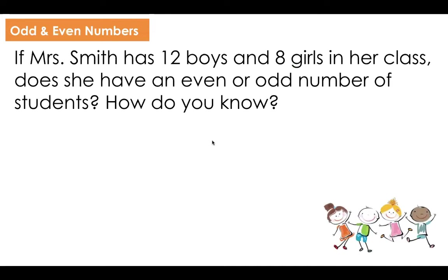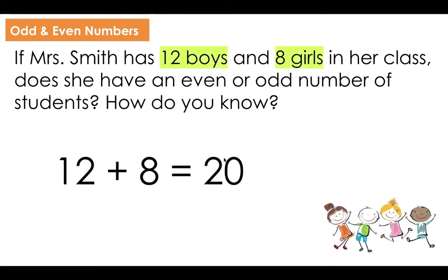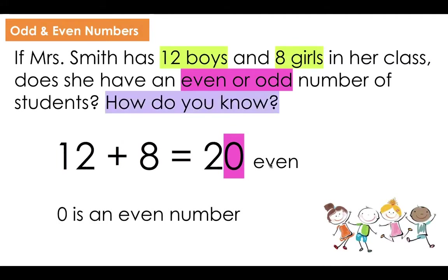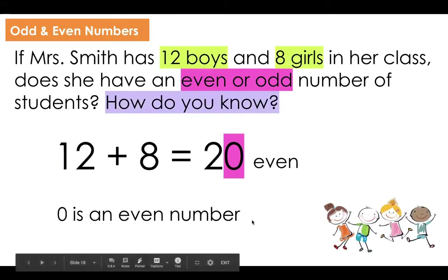If Mrs. Smith has 12 boys and 8 girls in her class, does she have an even or odd number of students? How do you know? You can pause the video to work through this story problem and check back. I know that 12 boys plus 8 girls — we need to figure out the total, which is 20. And I know that zero is an even number, so it is an even number.